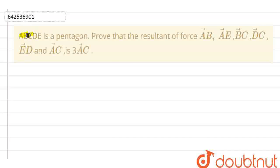Hello everyone, in this question we have: if ABCDE is a pentagon, prove that the resultant force of AB, AE, BC, DC, ED and AC is 3 times AC.